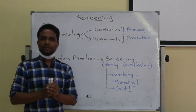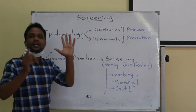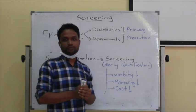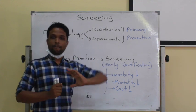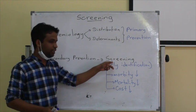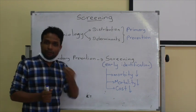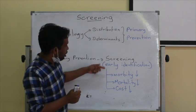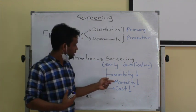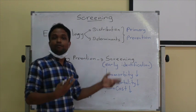Before talking about screening, it is important to discuss the two major branches of Epidemiology: distribution and determinants of diseases. We are interested in these in order to do primary prevention, where we prevent diseases before onset. In secondary prevention, we do screening for early identification of disease — after onset but preferably during the asymptomatic stage — in order to minimize morbidity, complications, mortality, and costs.